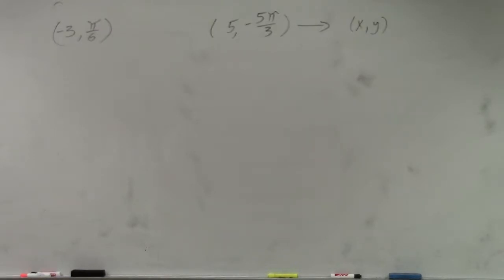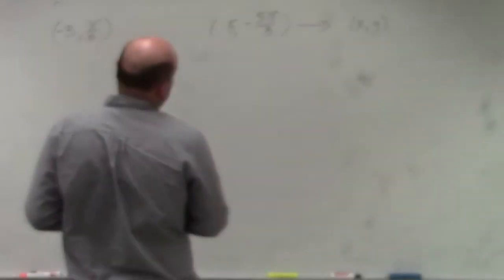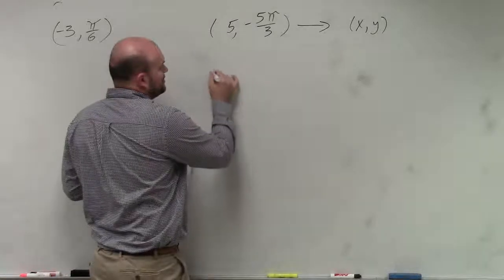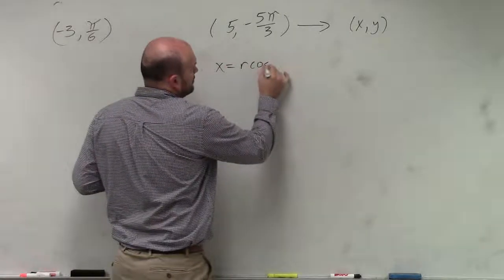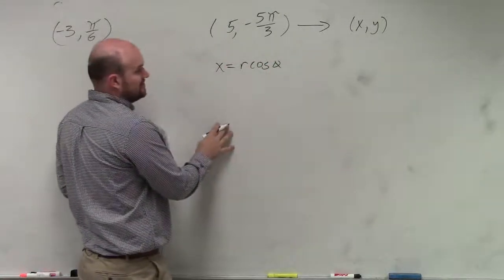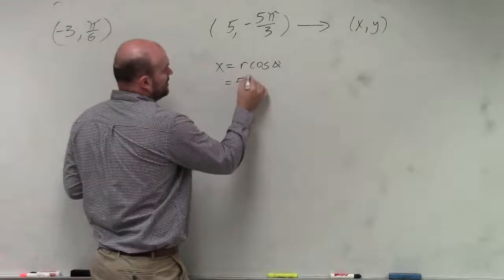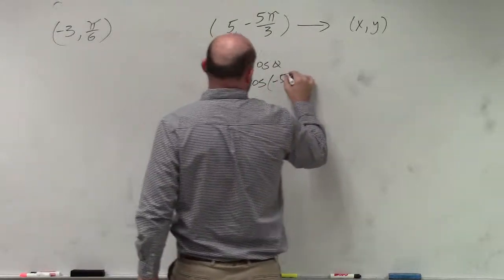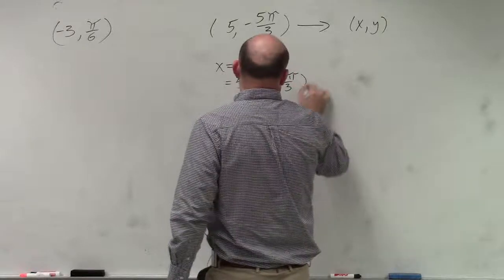OK. So in this example, ladies and gentlemen, if we want to go ahead and rewrite this in rectangular form, just remember that x equals r cosine theta. So all you're simply going to do is plug in your 5, and then cosine of negative 5 pi over 3.